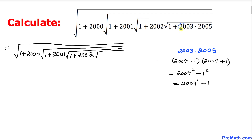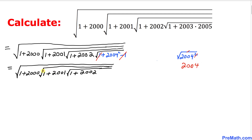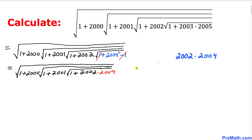So the whole radical expression stays the same except I replace 2003 times 2005 with 2004² minus 1. Now we can see that the positive one and negative one cancel out, leaving square root of 2004 squared. The square and square root undo each other, so we end up with simply 2004.